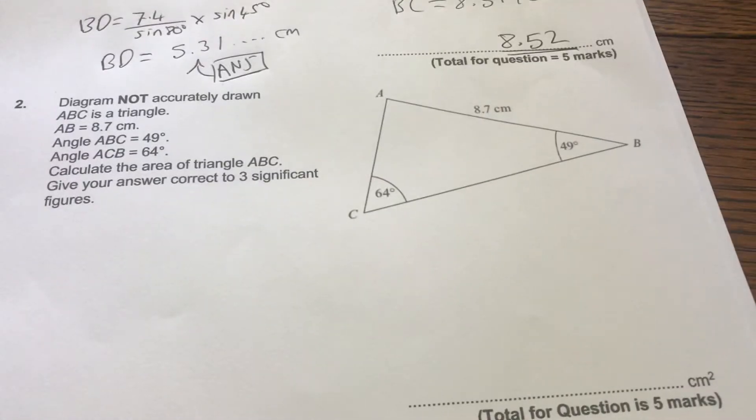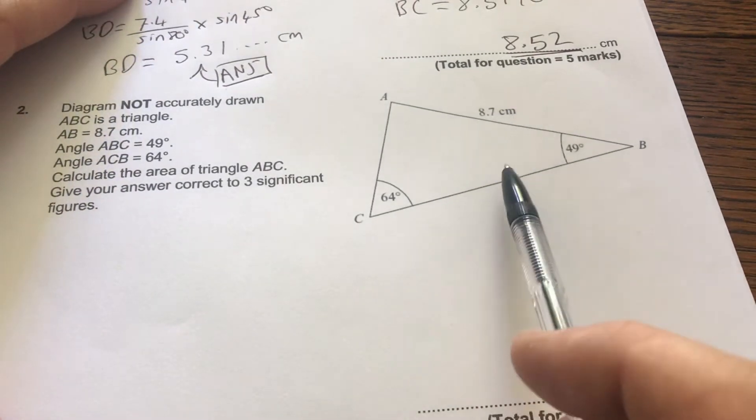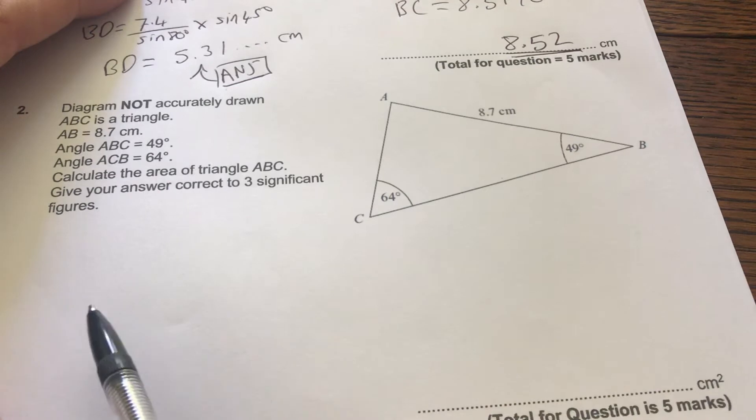Now to work out the area I need half a b sine c. So I need two sides together with an included angle.